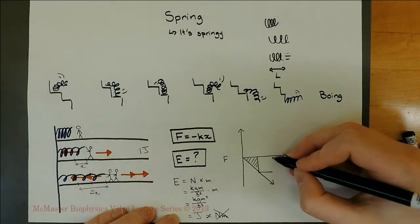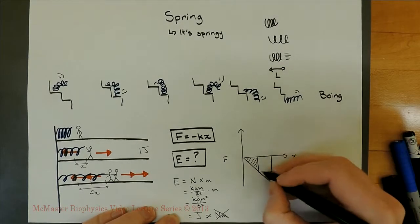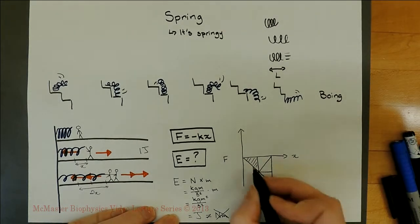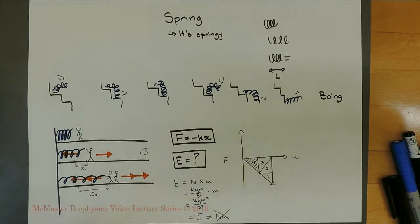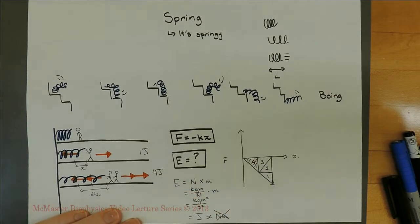On my force displacement curve, when I double displacement, that's the x, I get 1, 2, 3, 4 times the area. So my two stick figures exert 4 joules combined.